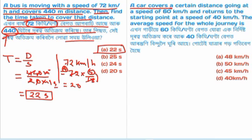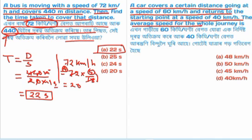A vehicle travels to a destination and returns to the starting point at a speed of 40 km per hour. The average speed for the whole journey is to be found. One direction is at 30 km per hour and return is at 40 km per hour.